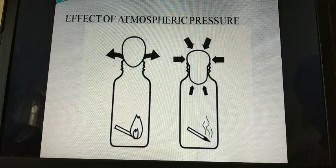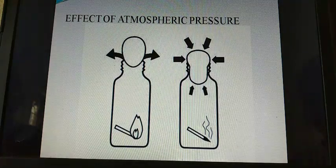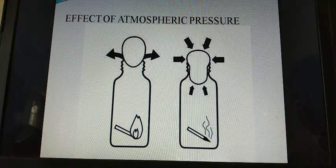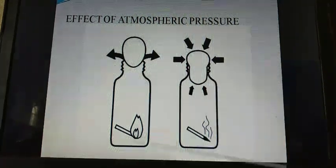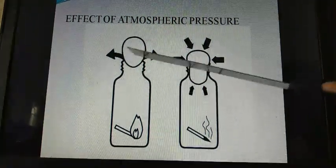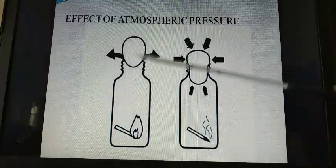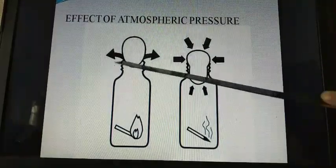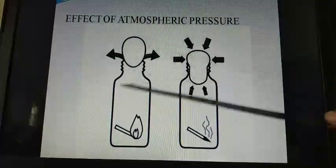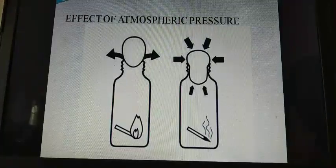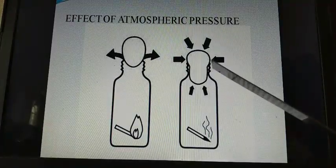Let's see an activity to understand the effect of atmospheric pressure. Take a conical flask. Take a well boiled egg and remove its shell. Place the egg on the mouth of the flask. It will not enter the flask. Next, you remove the flask. Remove the egg.